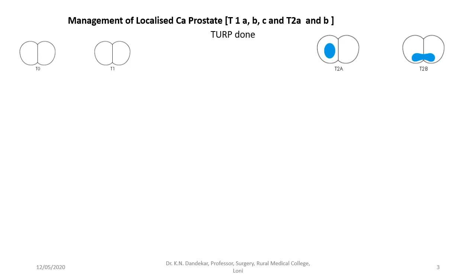Consider the patient who has undergone TURP for BPH but the histopathology report turned out to be adenocarcinoma. They will have T-staging of T1A or T1B. T1A is where the percentage of malignant cells will be less than 5%, and T1B is where the percentage of malignant cells is more than 5%. Put these patients under strict surveillance and follow them up for 3 months. At every visit, perform DRE, TRUS and estimation of PSA.